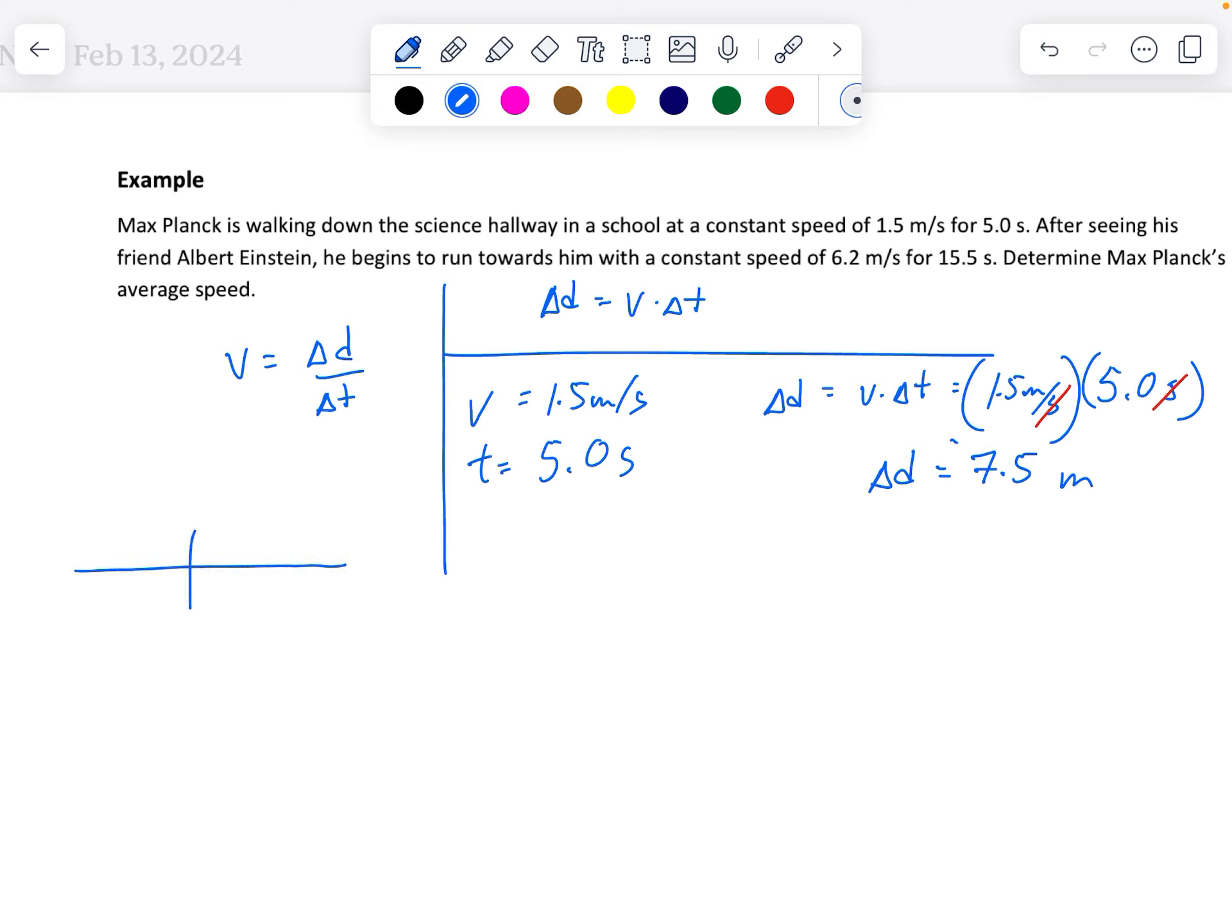So we're going to have two chunks of distance and the whole amount of time will be what we're going to use to calculate the total average speed. So the second interval we have the speed changes to 6.2 meters per second and the time lasts for 15.5 seconds.